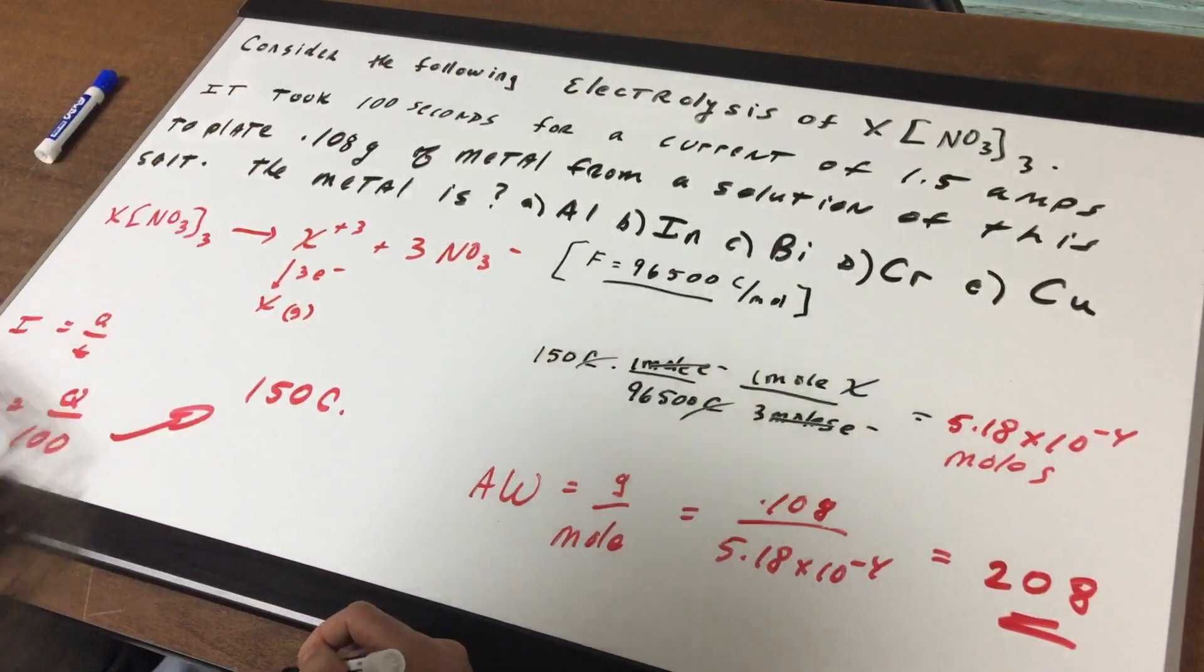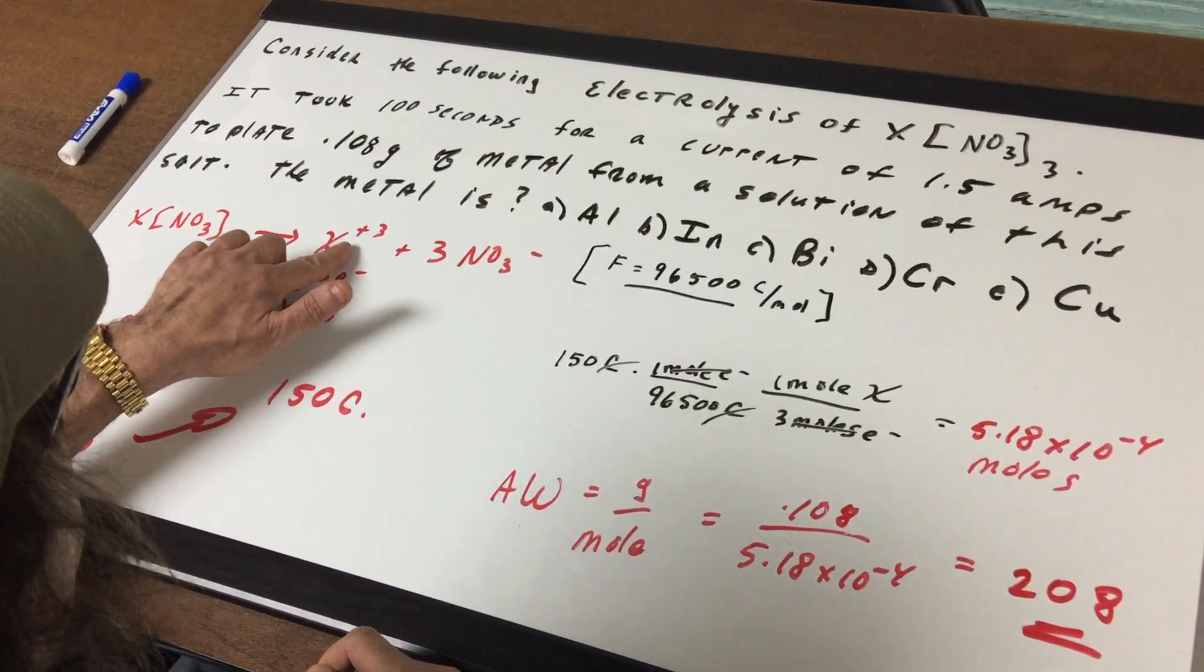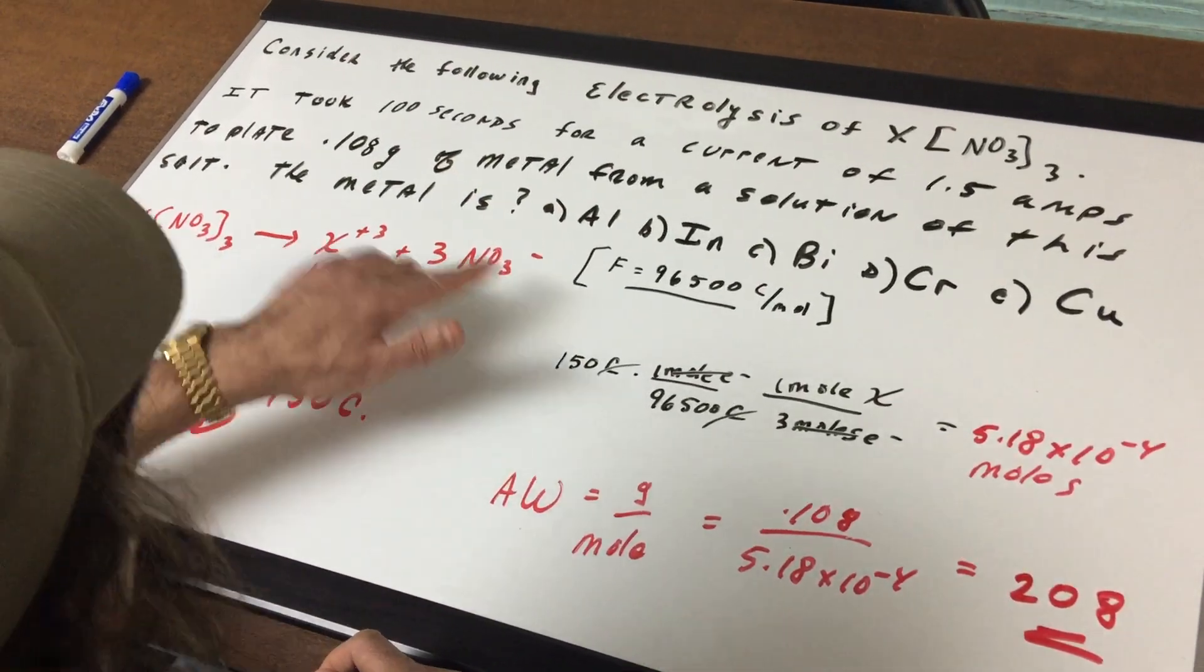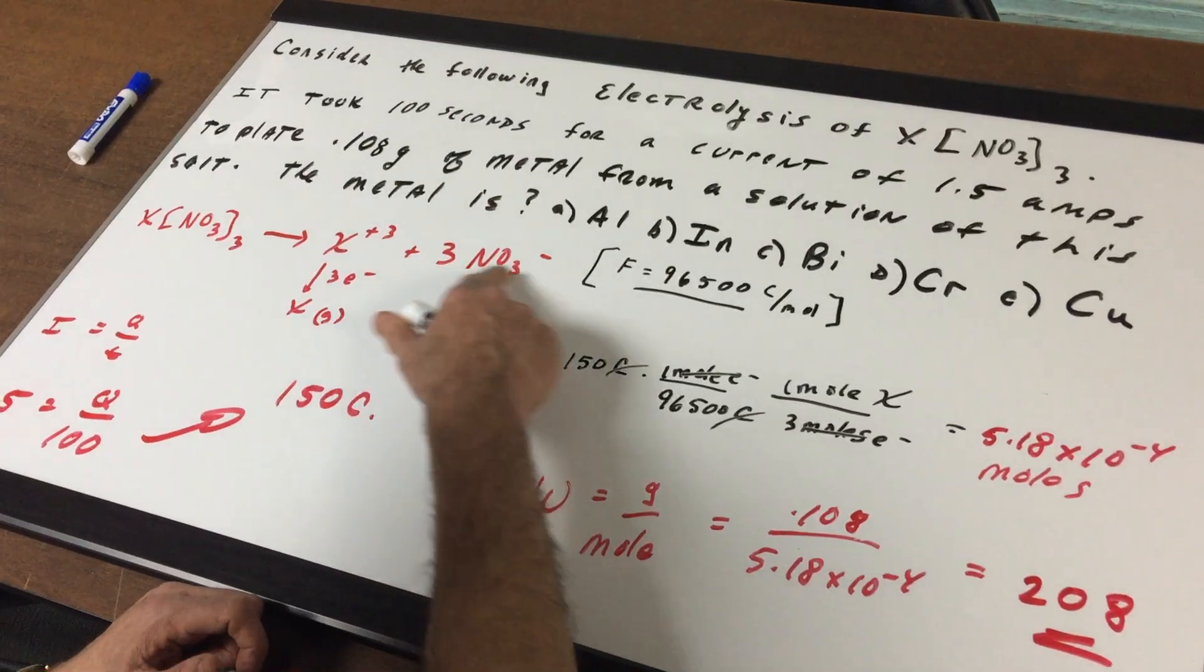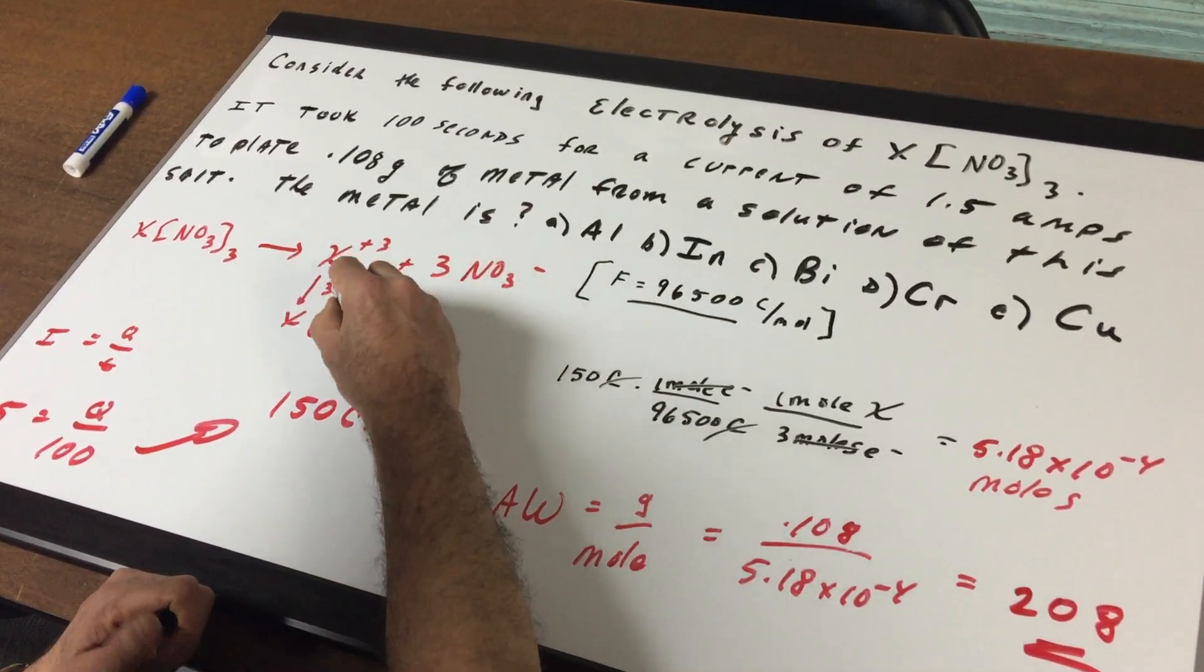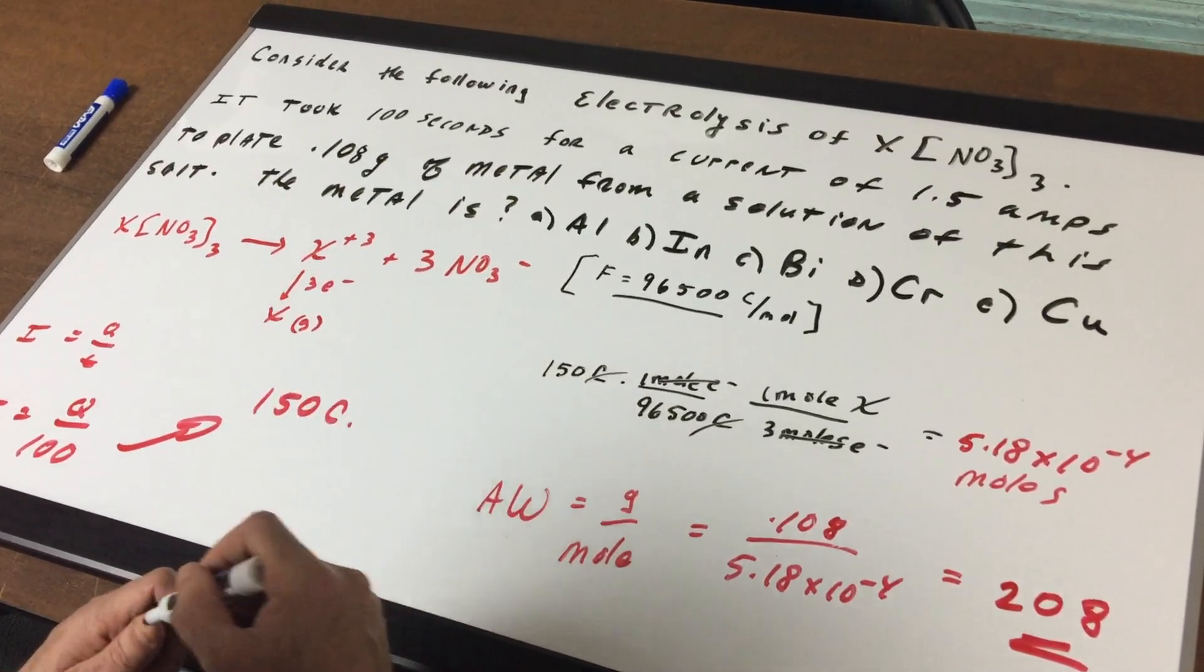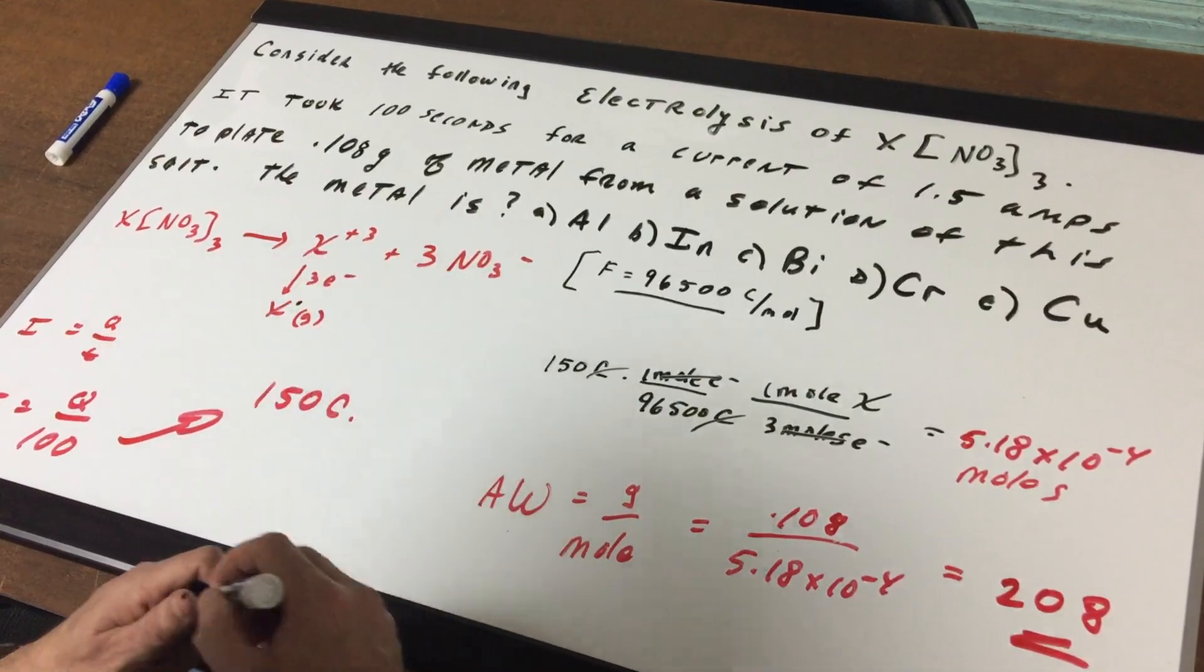The first move I do is I take the salt and I break it down into X³⁺ and 3 nitrates. Obviously, if there's 3 nitrates, there's a minus 3, so this must be a plus 3. And you need 3 electrons to take this reduction from a plus 3 to the solid metal X.